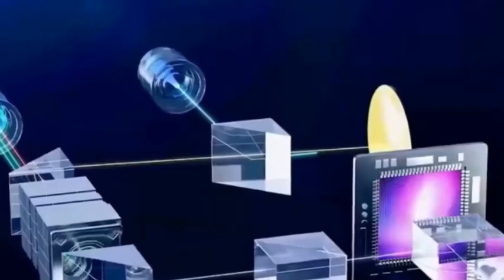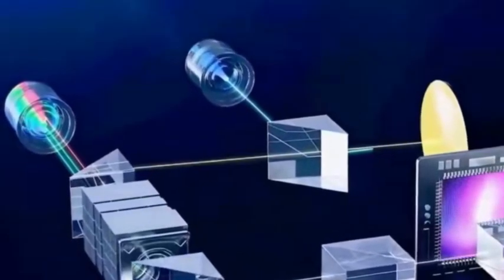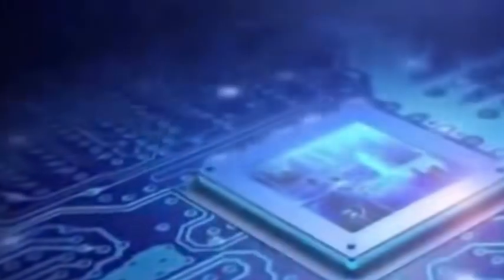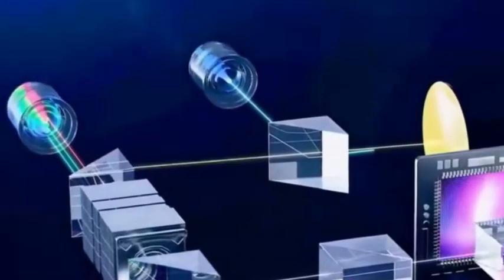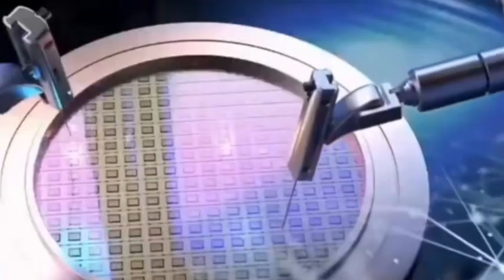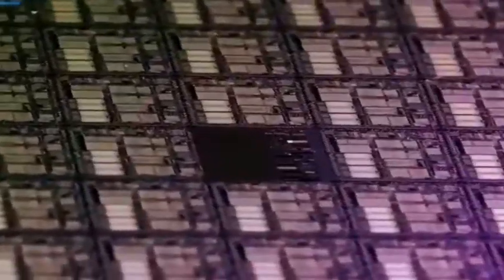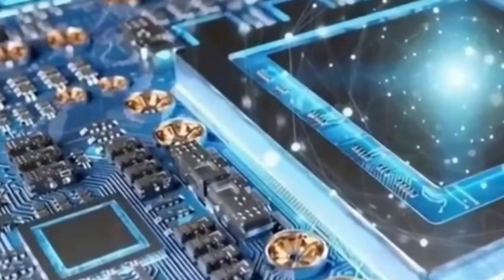Chips are also often called integrated circuits or microcircuits. Most of the chips mentioned in daily life are silicon-based materials. They integrate various components required for circuits such as transistors, resistors, capacitors and inductors and wiring on silicon-based semiconductor wafers and then package them.